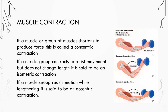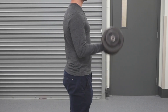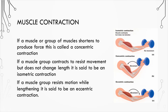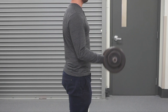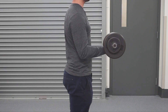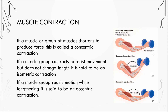If a muscle or group of muscles shortens to produce force, this is called a concentric contraction. If a muscle group contracts to resist movement but does not change length, it's said to be an isometric contraction — isometric referring to same length. If a muscle group resists motion while lengthening, it's said to be an eccentric contraction.